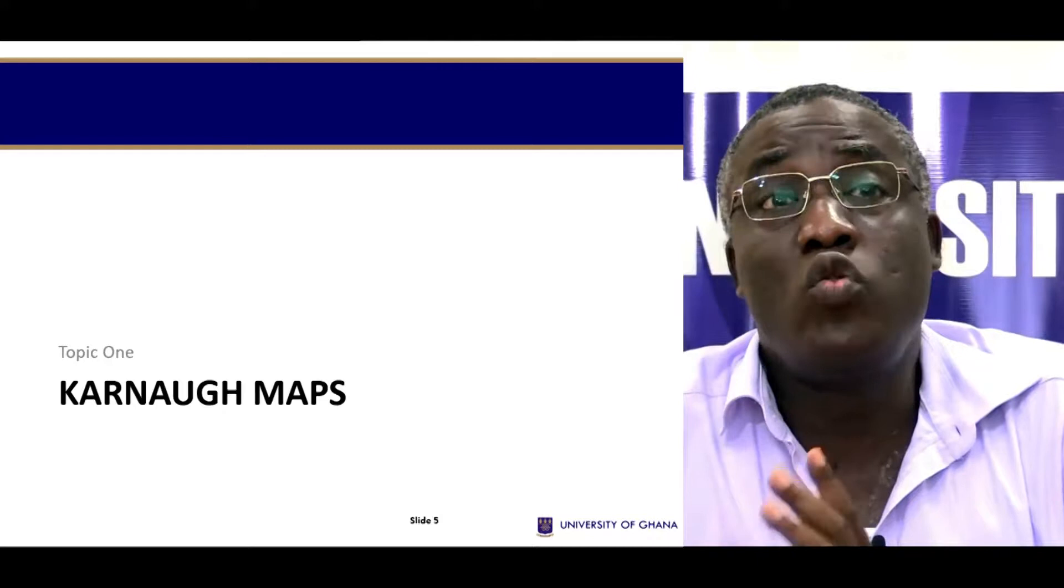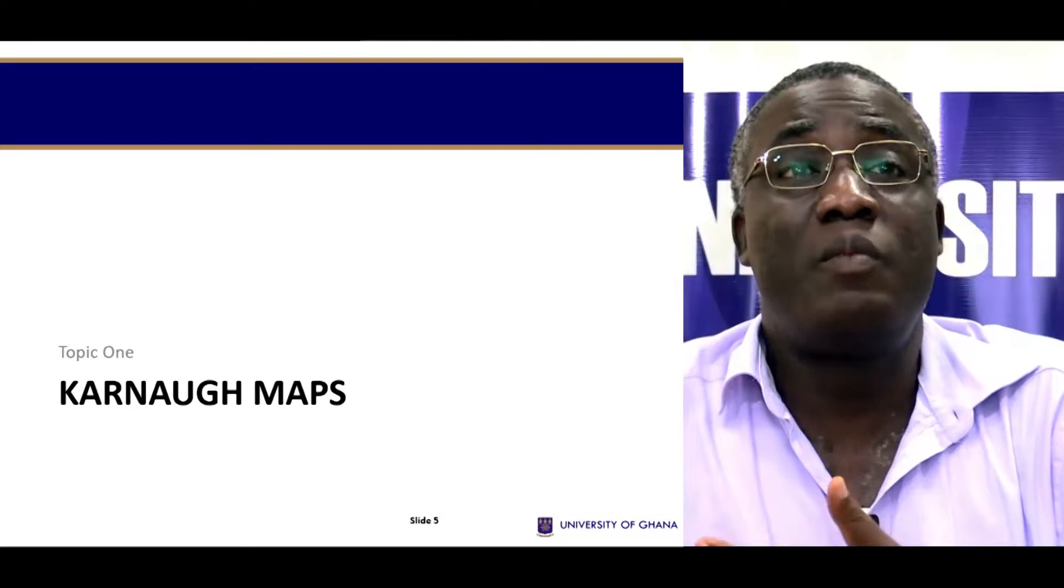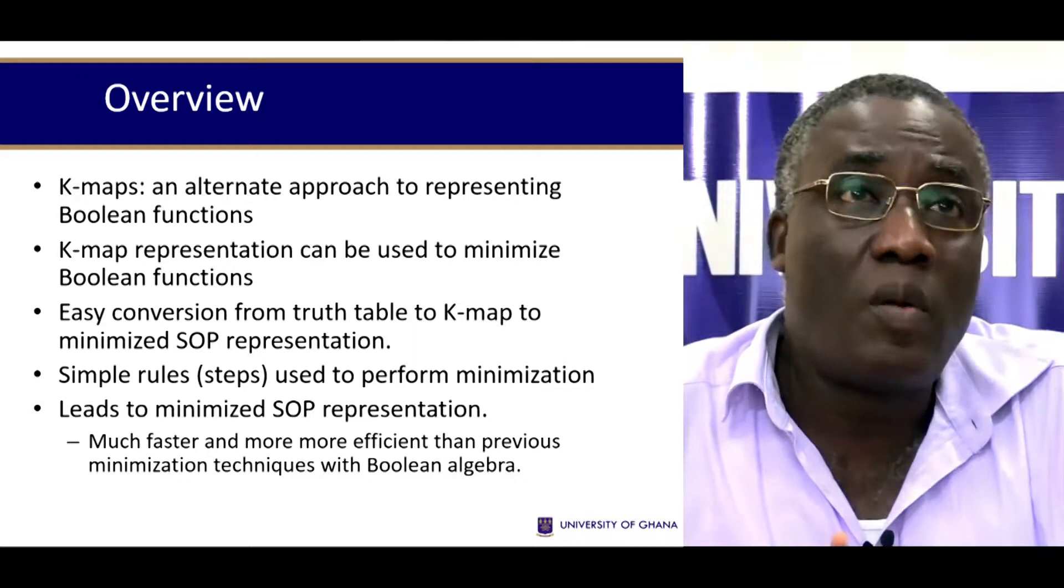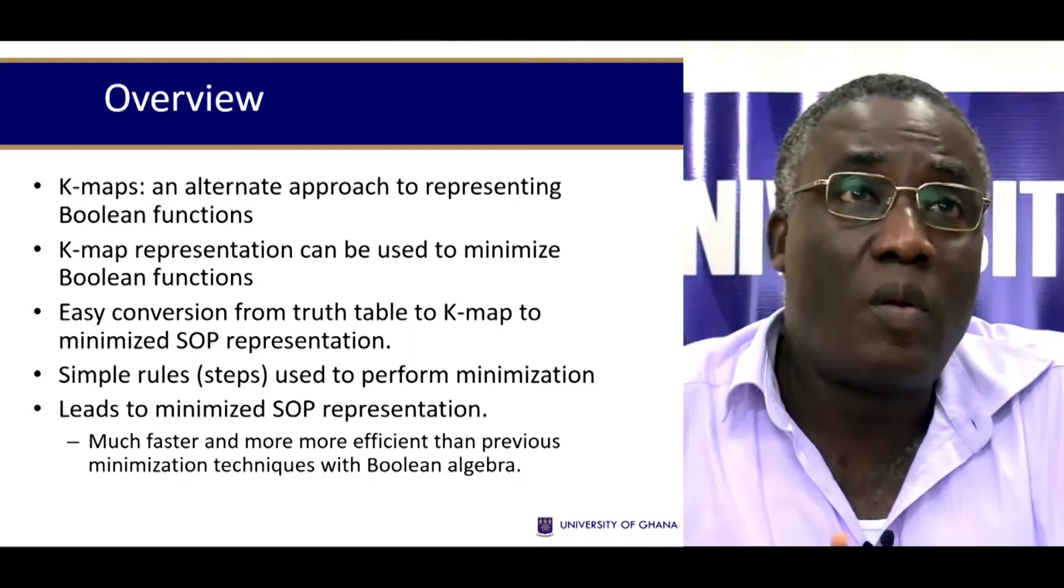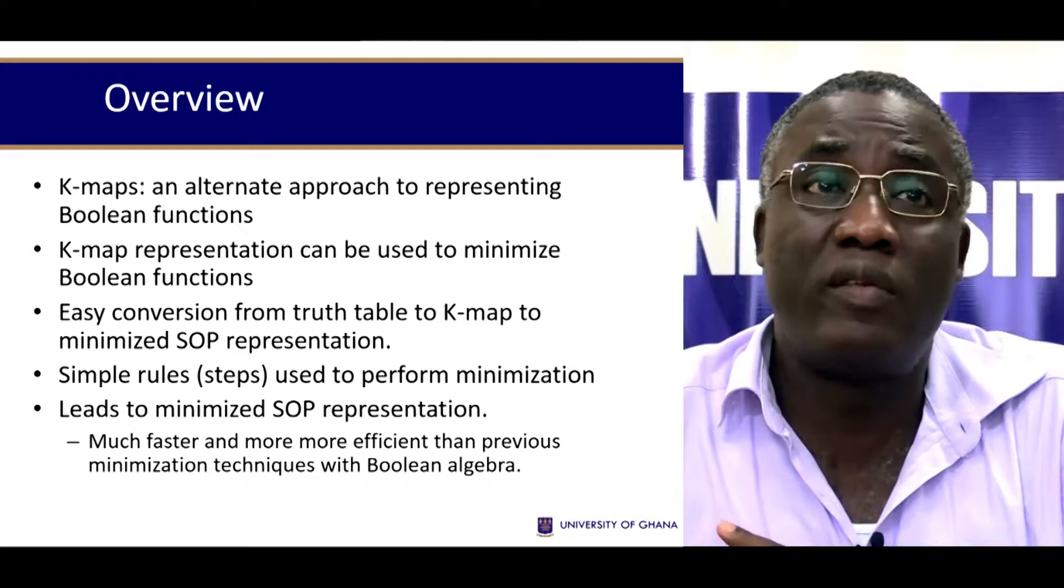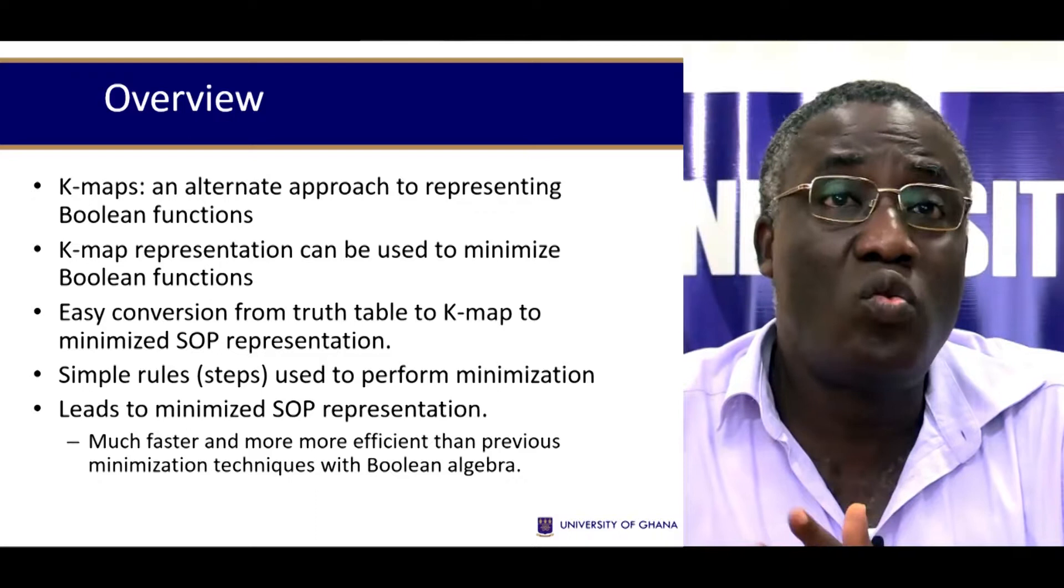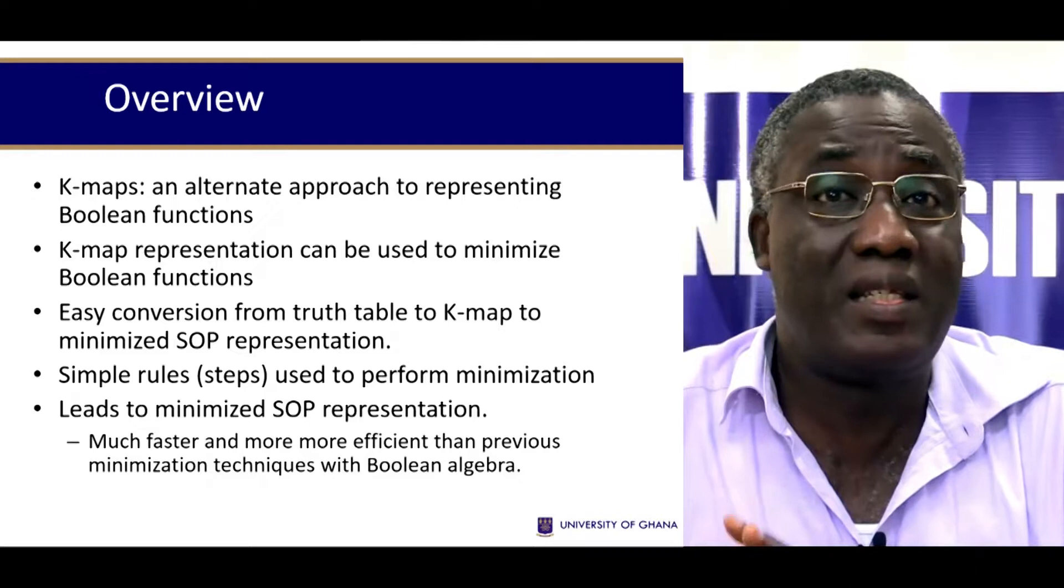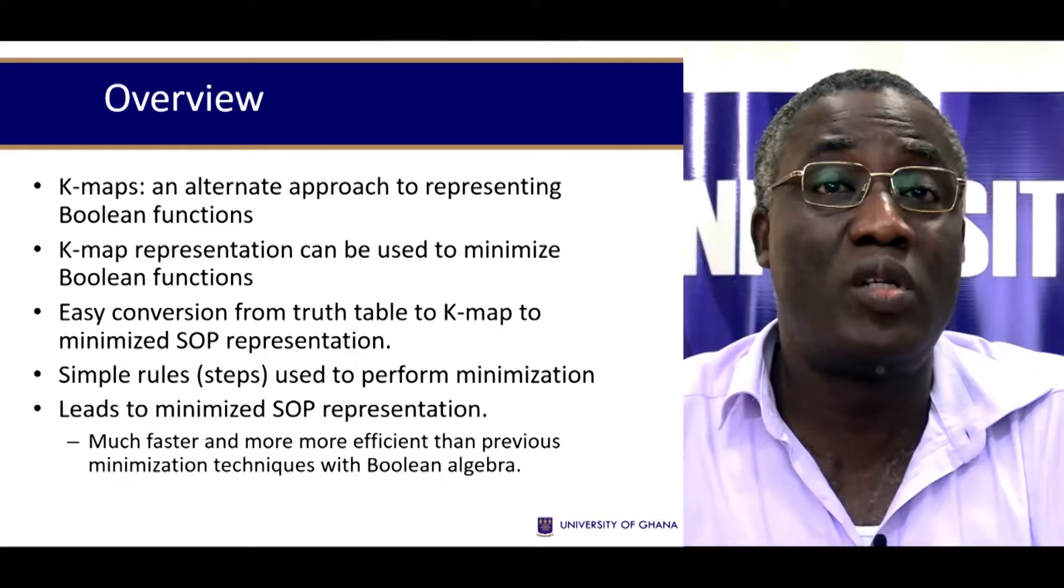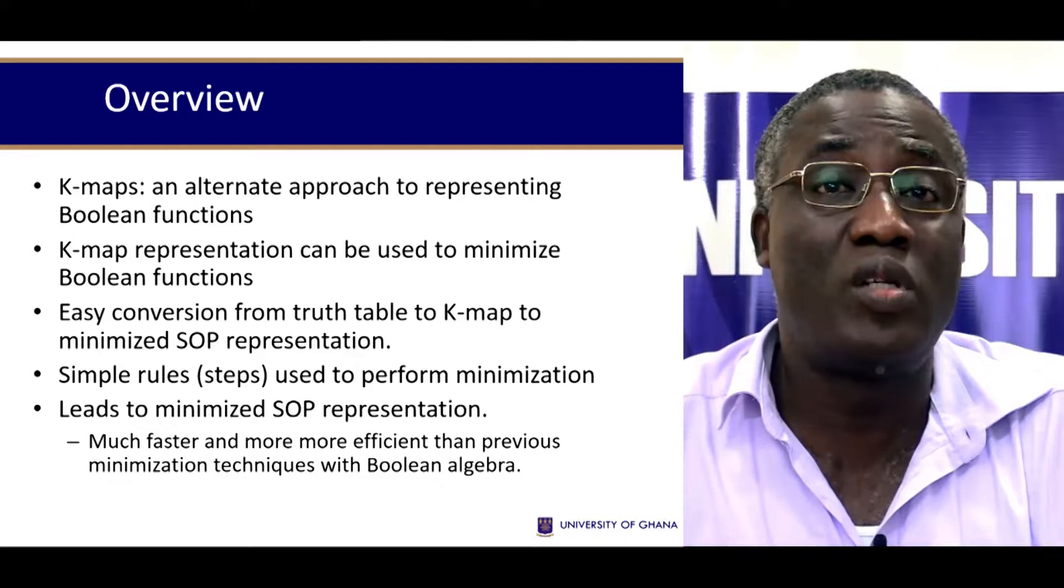Karnaugh maps are a very useful tool. They are a graphical way of representing Boolean functions. We normally designate them as K-maps. It's an alternate approach to representing Boolean functions that can be used to minimize them. It gives you an easy conversion from truth table to K-maps. It's much faster, more efficient than the previous minimization techniques such as Boolean algebra. You don't have to remember all the rules or the laws of Boolean algebra.